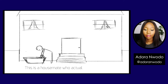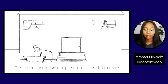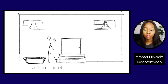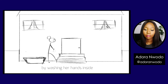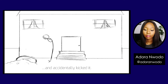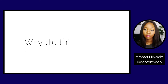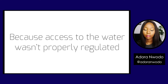A housemate who actually needs water gets some into his bowl and goes back inside. A second person, who happens not to be a housemate, comes to the public area where the water is and makes it unfit for everyone by washing her hands inside. Another housemate happens to be walking in the direction of the water and accidentally kicks it — now all the water is gone.